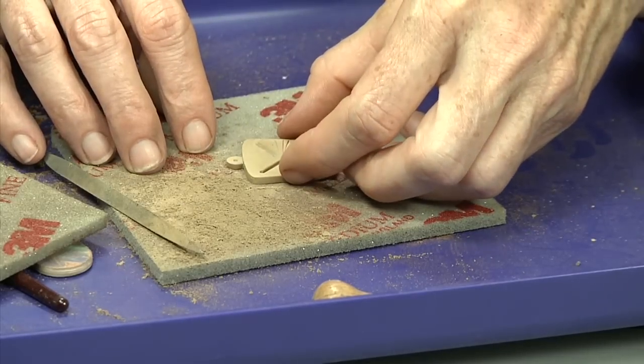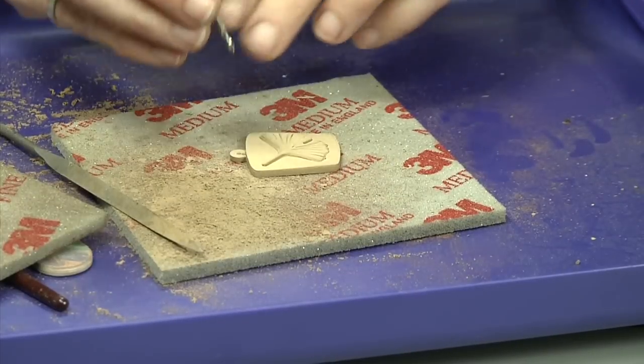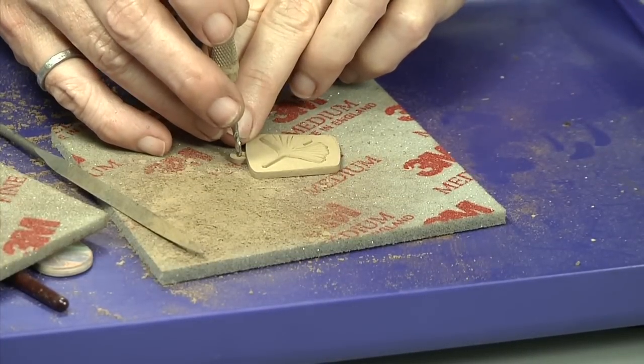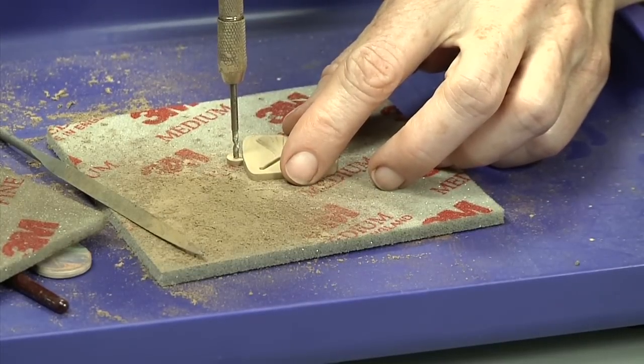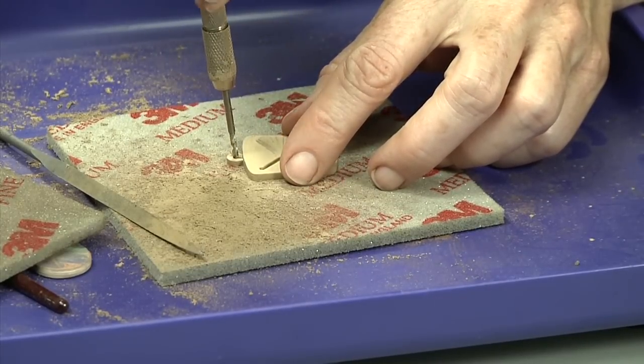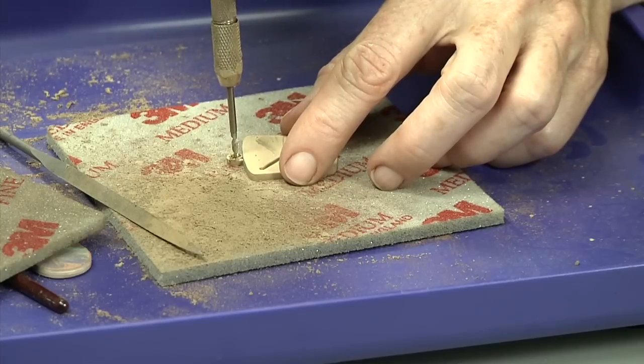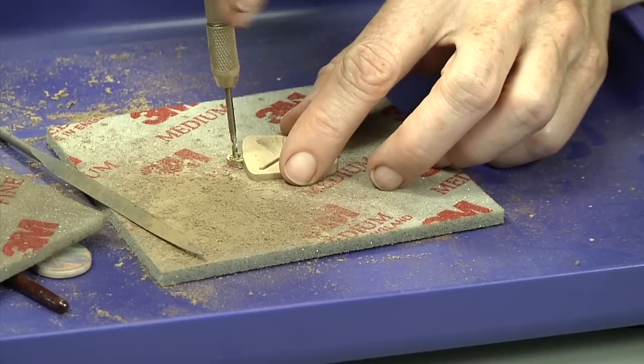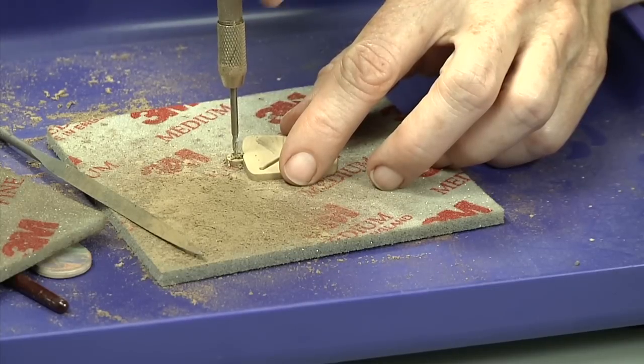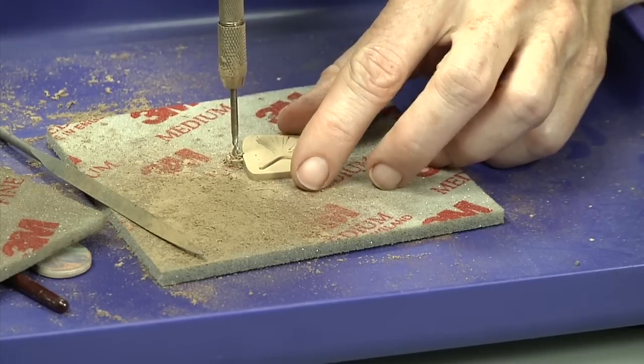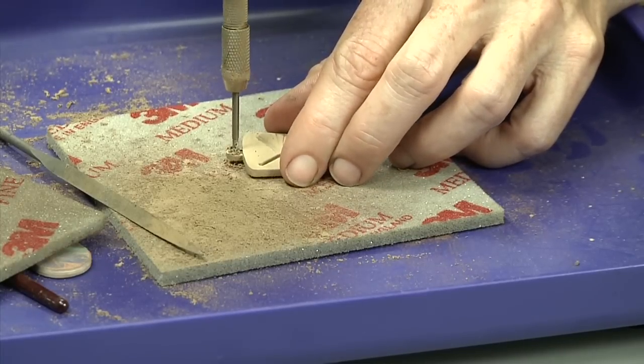I'm using a two millimeter drill in my swivel pin vise and I'm setting this just on my 3M polishing pad. This makes a really good surface for drilling. What I'm doing is I'm very carefully and slowly drilling through the clay and it's very soft so I don't need to apply any pressure at all. I just allow the drill, the weight of the drill to do the drilling for me and I can feel once I hit the bottom and then I start to turn it backwards and forwards.